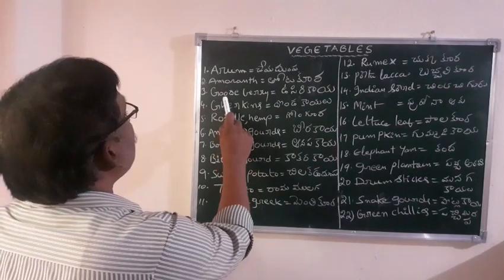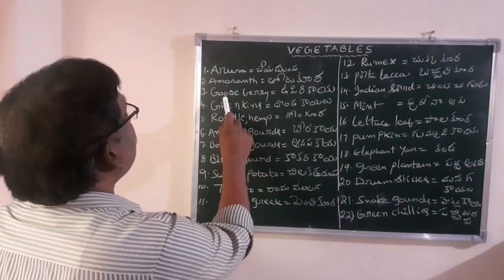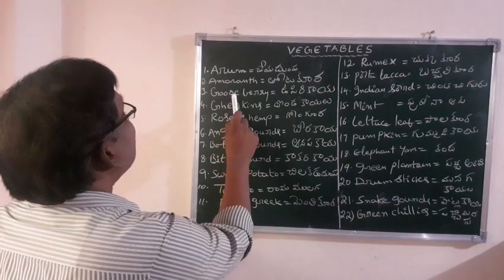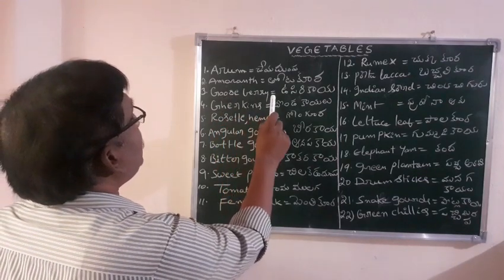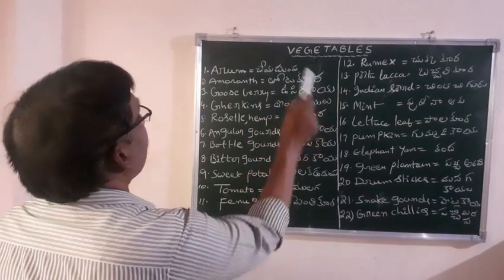Third word: Gooseberry. G-O-O-S-E-B-E-R-R-Y. Gooseberry means usirikaay.